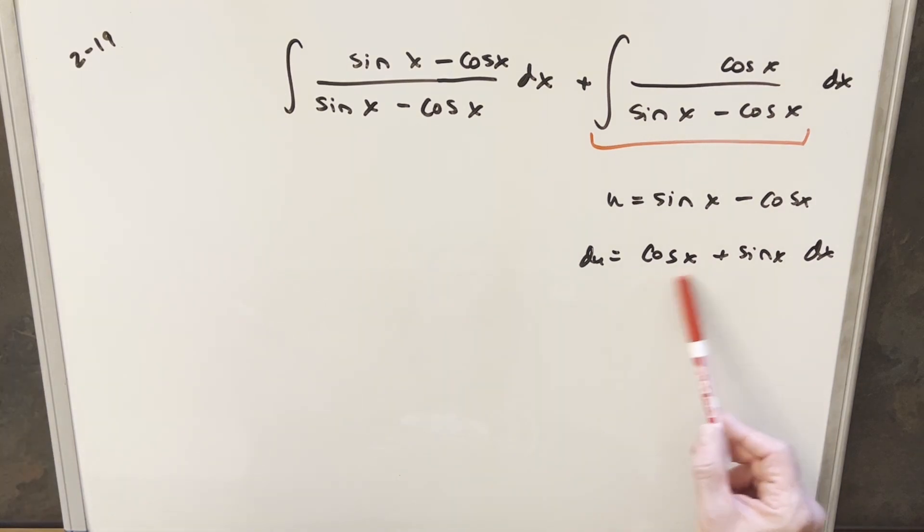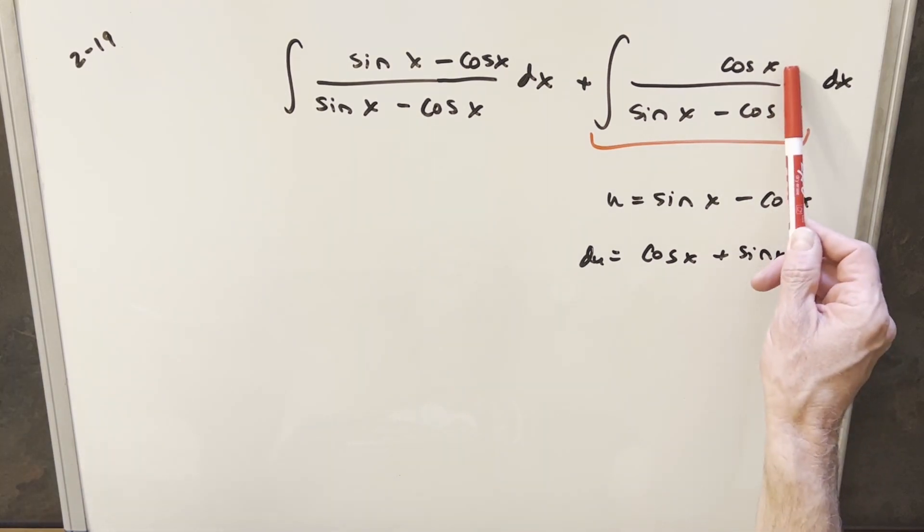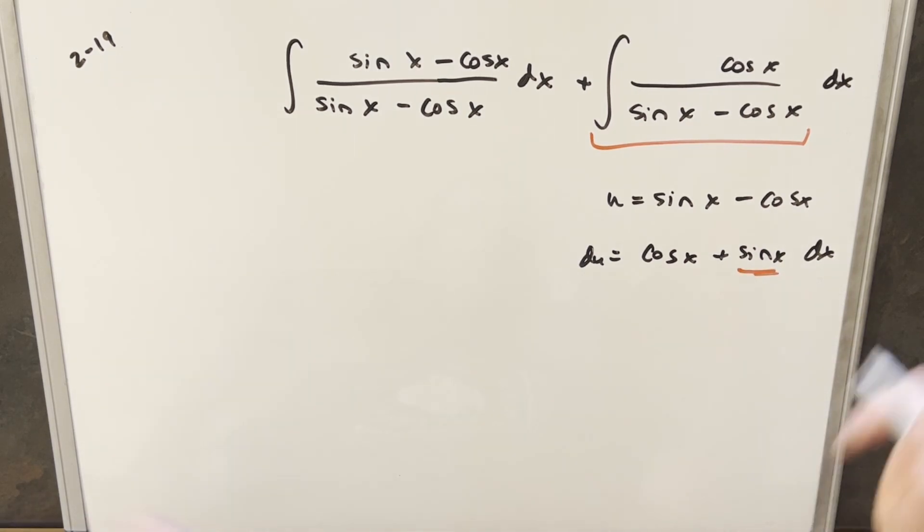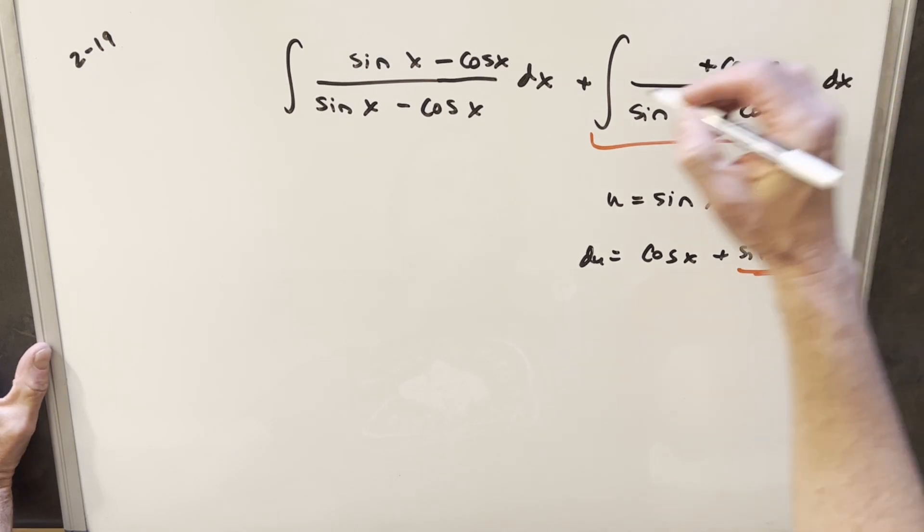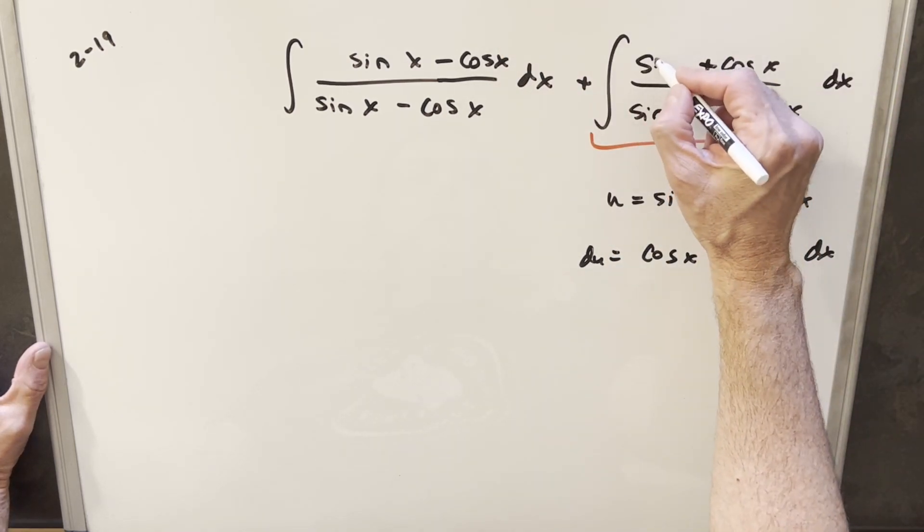So now for our du, we have cos x plus sine x, but what we have in the numerator here is just cos x. So what we really want is we really want this sine x for this to work out nice. So I'm going to actually just create that again, kind of like what we did over here. I'm just going to kind of force this to happen.